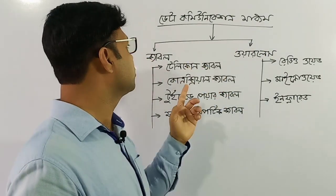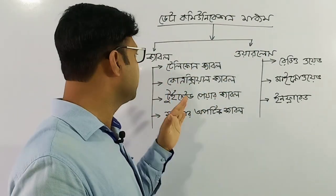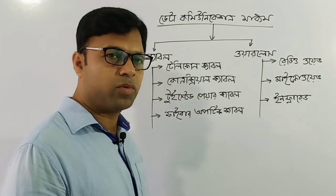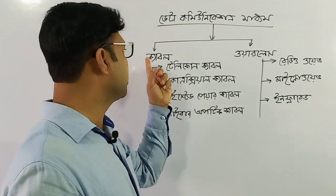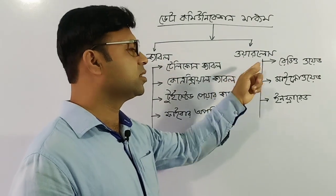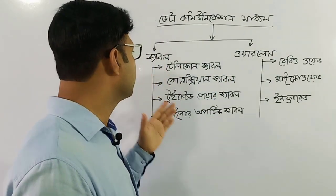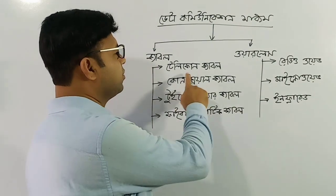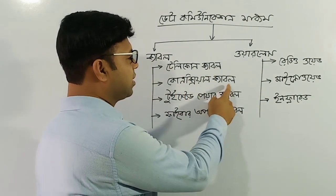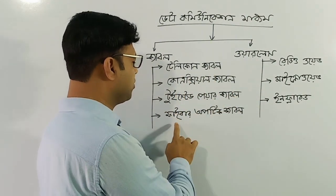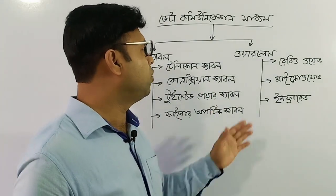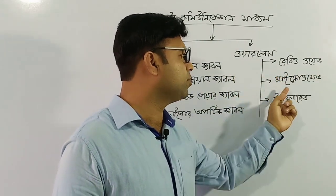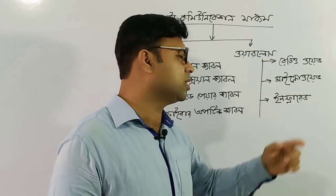There are two types of data communication. The data can be transmitted via cable and via wireless. There are four types of cable: coaxial cable, twisted pair cable, fiber optical cable. For wireless, we have radio, microwave, and infrared.